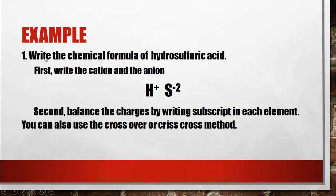We have an example: the chemical formula of hydrosulfuric acid. The cation and anion here are hydrogen and sulfur, from the word 'hydrosulfuric.' We write the hydrogen cation and the sulfide anion, which has a negative 2 oxidation number. We balance the charges by writing a subscript for each element, using the crossover or crisscross method.